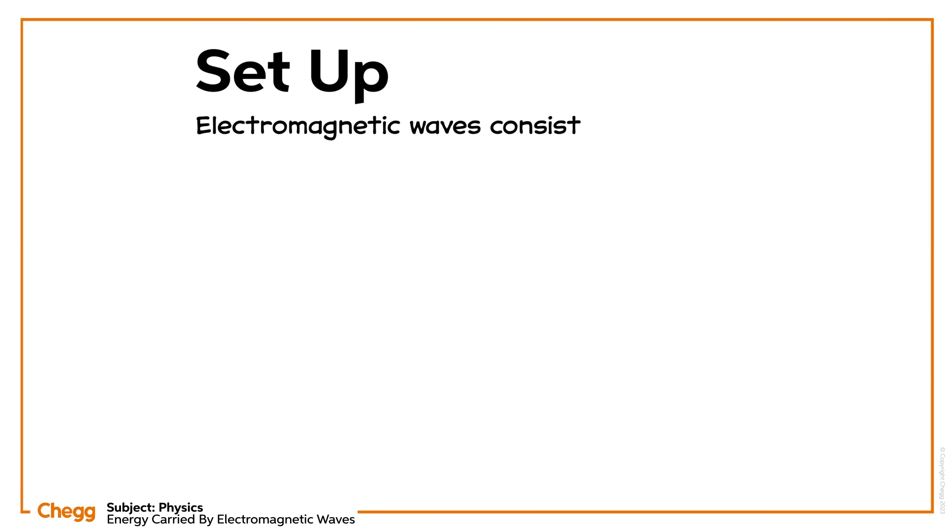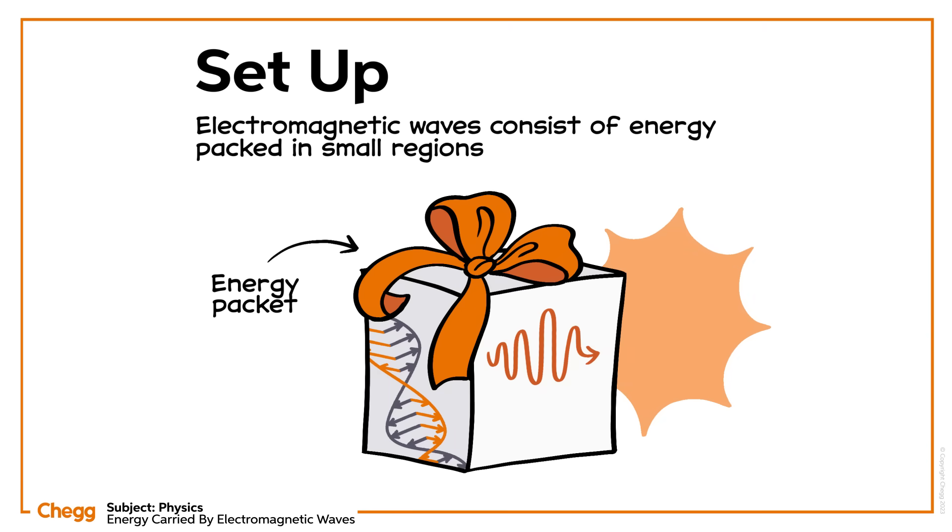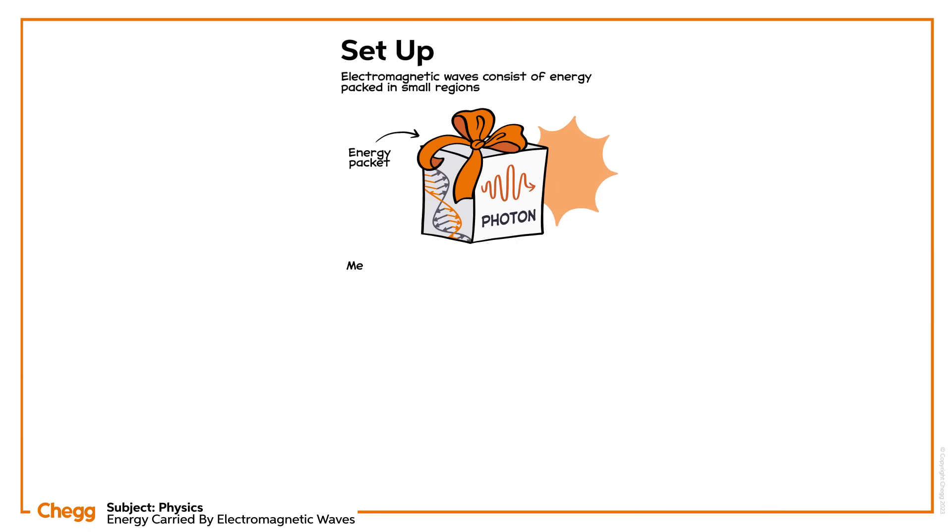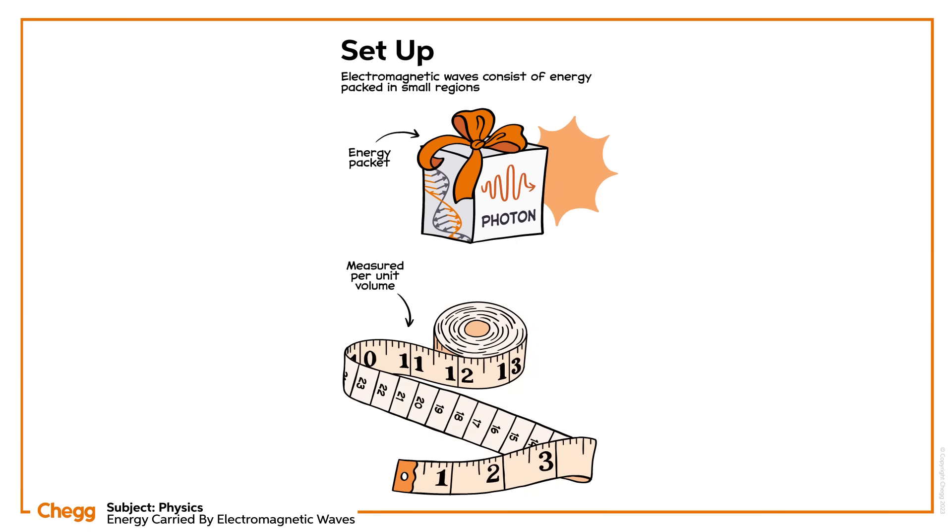Electromagnetic waves consist of energy packed in small regions called energy packets, also known as photons. In general, the energy of electromagnetic waves is often measured per unit volume, called the energy density of electromagnetic waves.